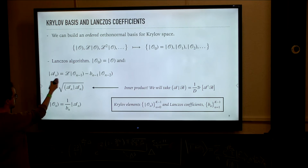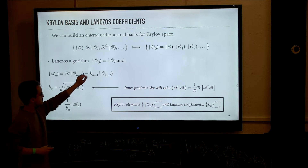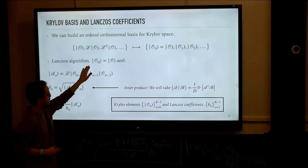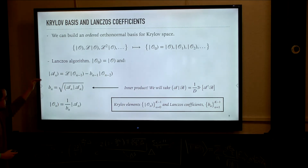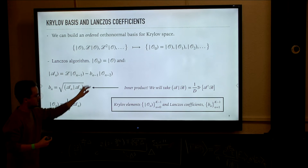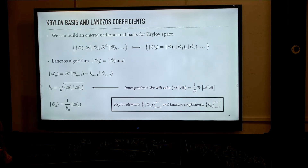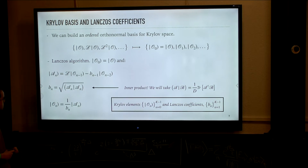This orthonormal basis is built by taking some rearrangement of the original set of consecutive powers of the Liouvillian, retaining a notion of ordering suitable for time evolution. This is achieved by the Lanczos algorithm. The idea is to take as a seed for the algorithm just the initial condition — the first element of what we will call the Krylov basis is the initial condition itself. At every step we just apply the Liouvillian on the previous element of the basis and re-orthogonalize it only with respect to the immediately previous element; it is automatically orthogonal to all other previous elements.